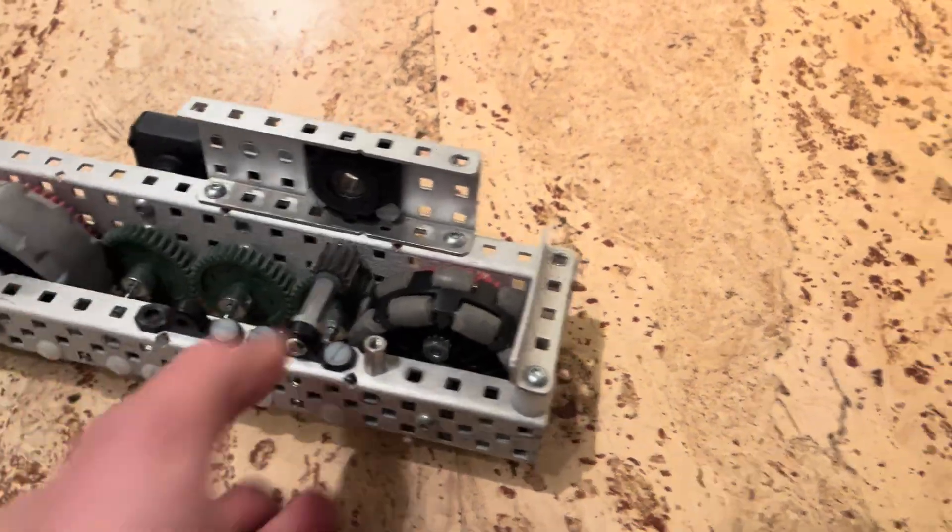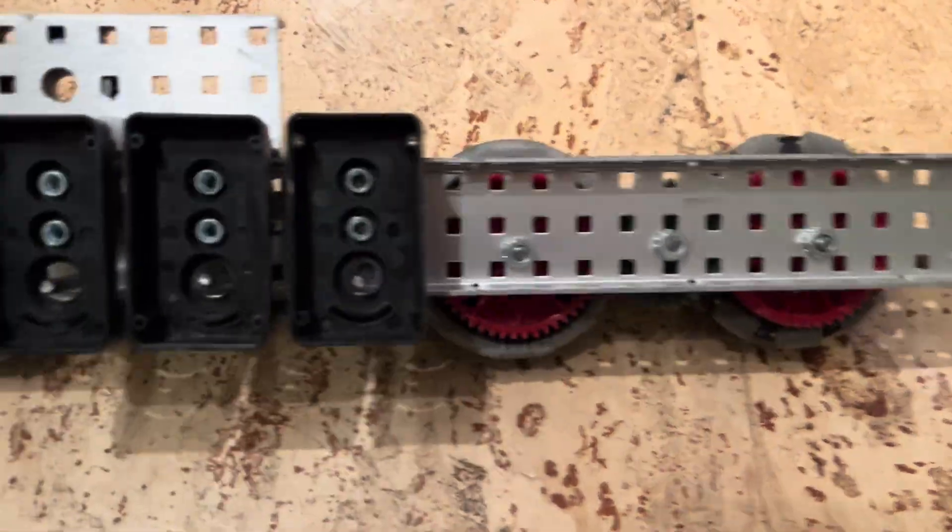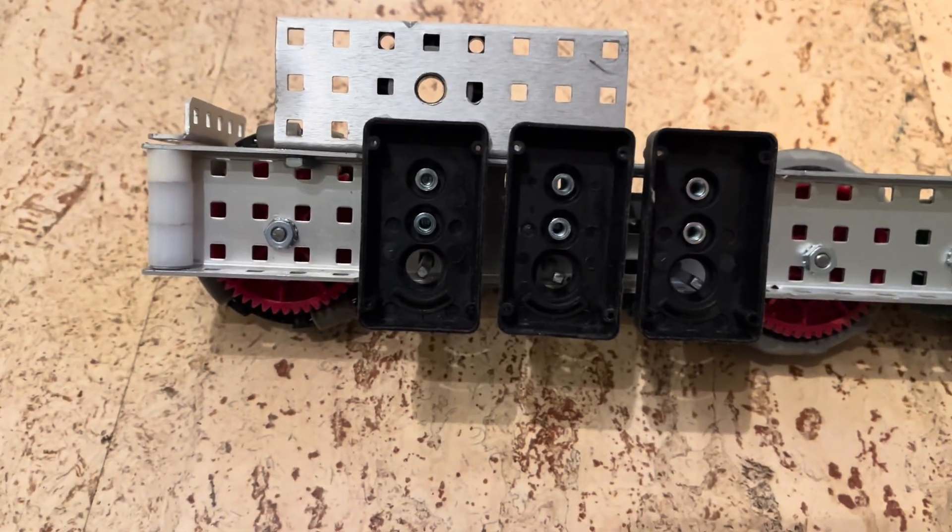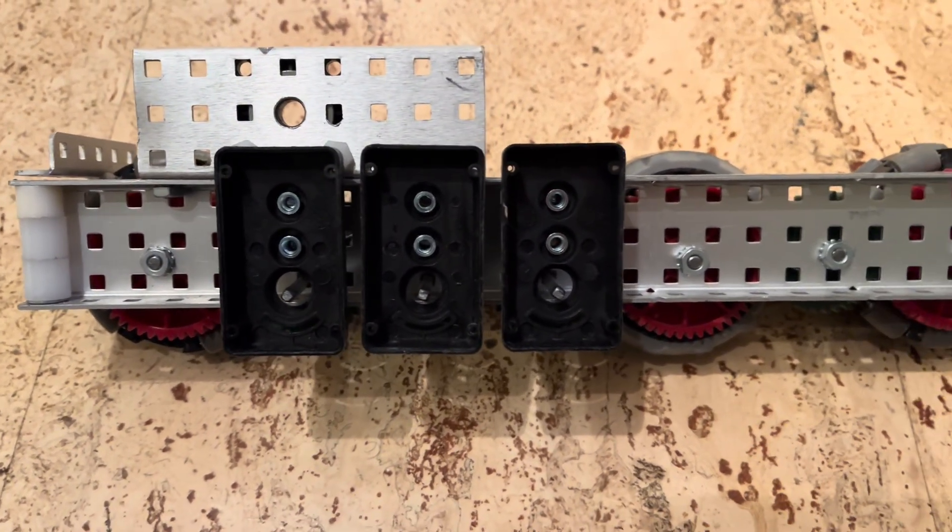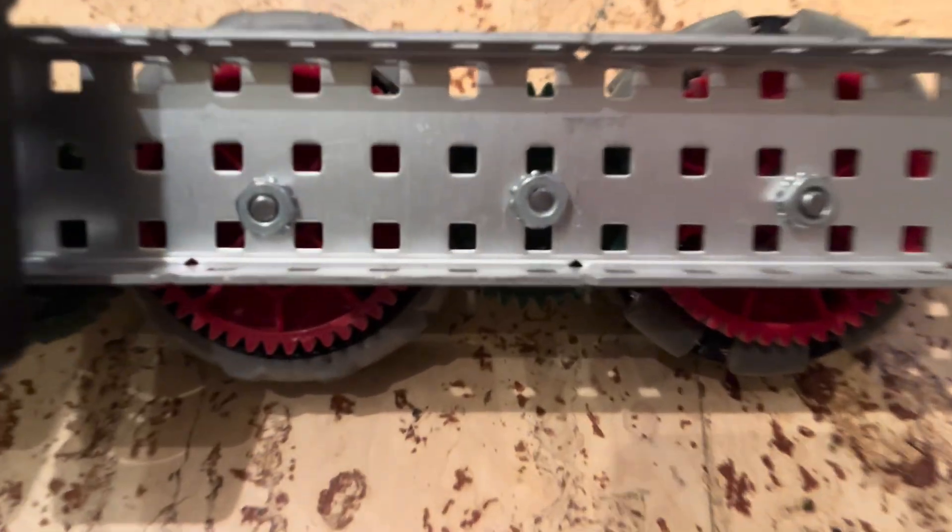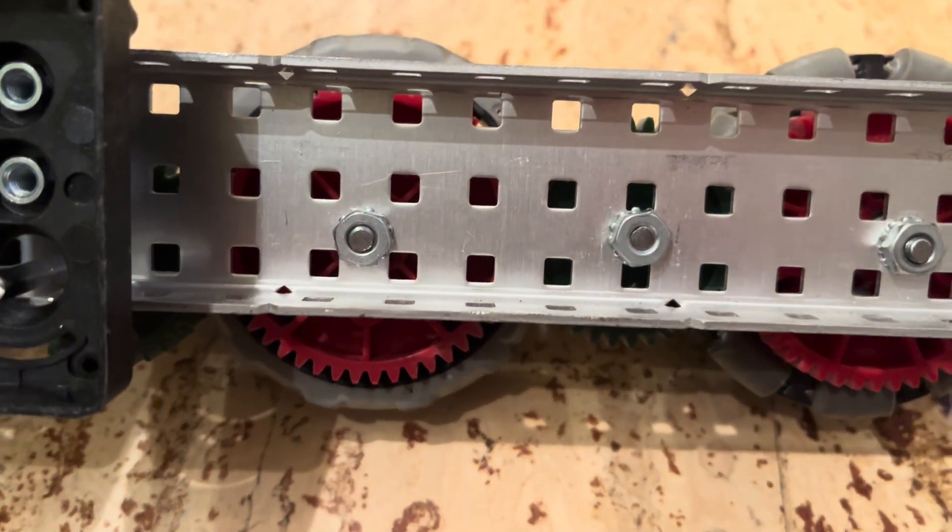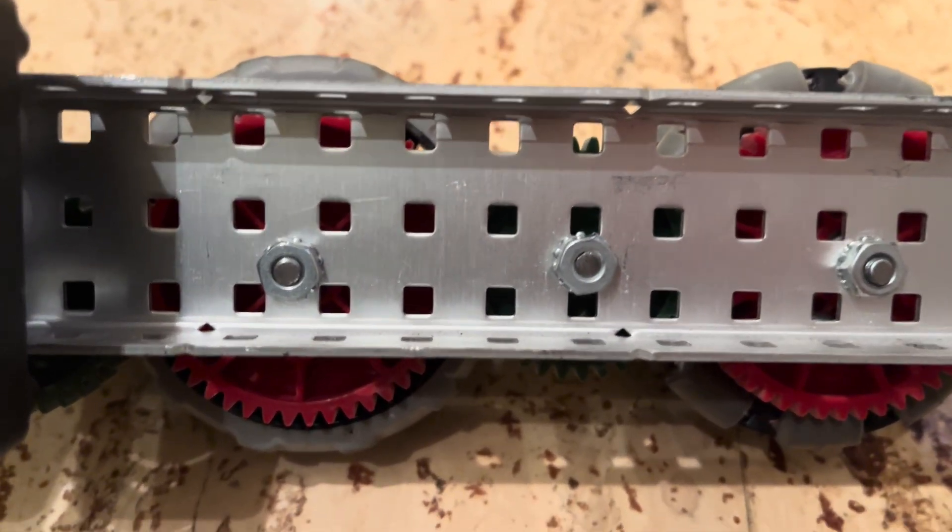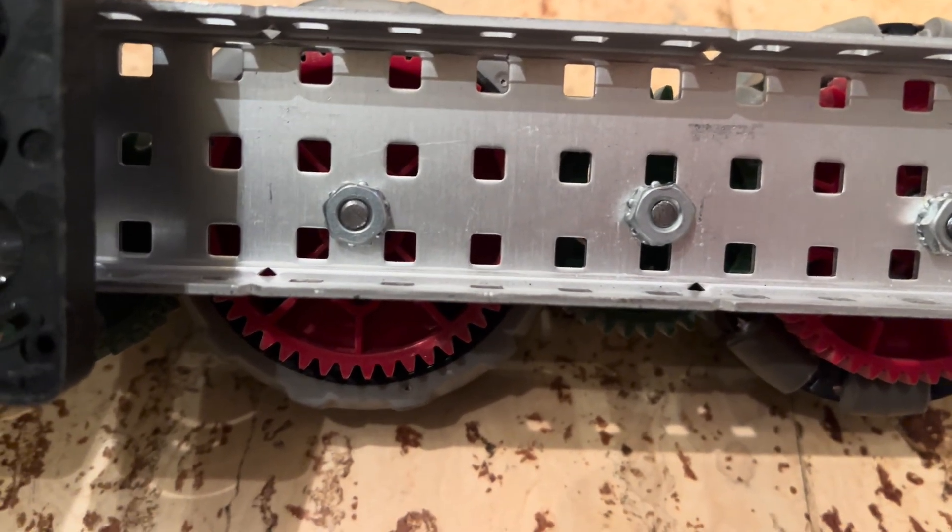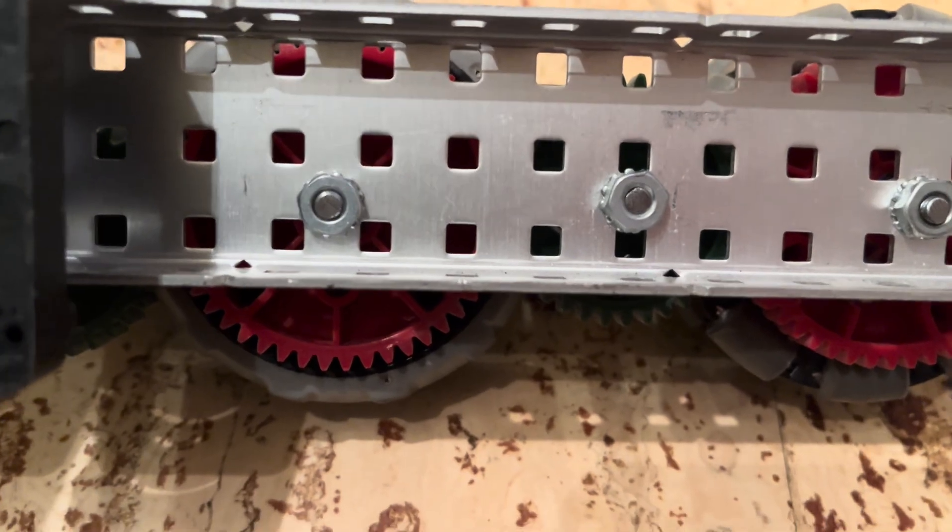First thing you'll notice is we have the three wide c-channel here and that allows us to mount our motors vertically. It also allows us to have these custom drilled holes in there which since they're the exact size of a screw you don't need to put a bearing flat on those holes, so that's very beneficial for screw joints.